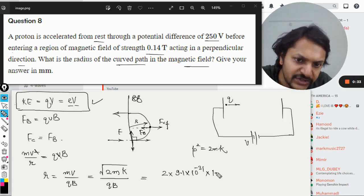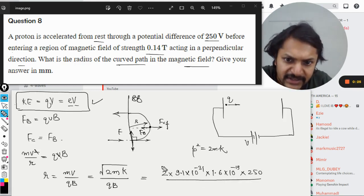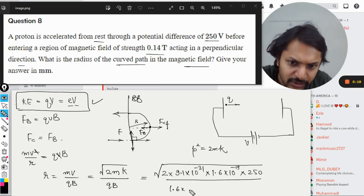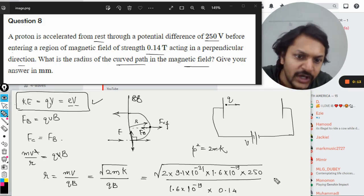The voltage is 250, so it will be a square root here divided by the charge on the proton times the magnetic field, which is 0.14. The answer will be in meters.